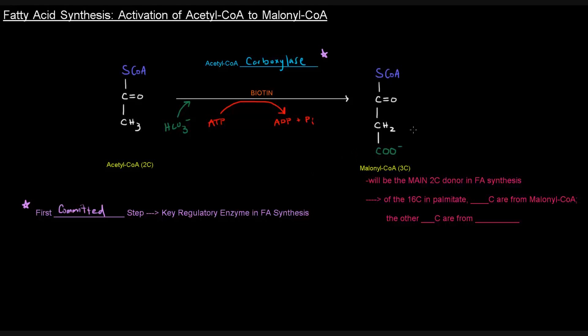Malonyl-CoA is going to be the main 2-carbon donor in fatty acid synthesis. When we're building a fatty acid, we continually add 2-carbon units at a time. The molecule that's donating those 2-carbons at a time is malonyl-CoA. It's kind of weird though, because this is a 3-carbon molecule. Why would a 3-carbon molecule be the 2-carbon donor?